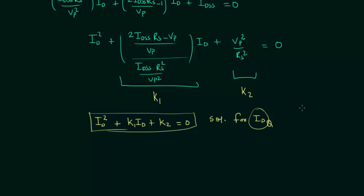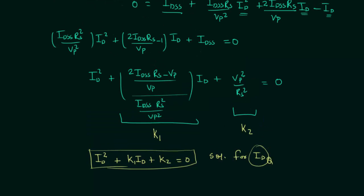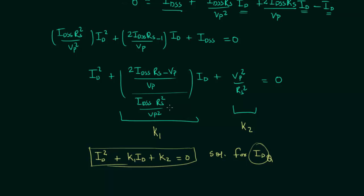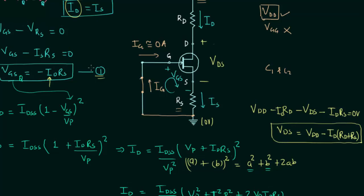We already have the operating point coordinates: VGS(Q) and ID(Q). As you can see, it is complicated to calculate the drain current mathematically in this case, because VGS is dependent on ID — it equals −ID·RS rather than a fixed value like −VGG. In the next lecture I will show you how the graphical approach is much better. See you in the next lecture.